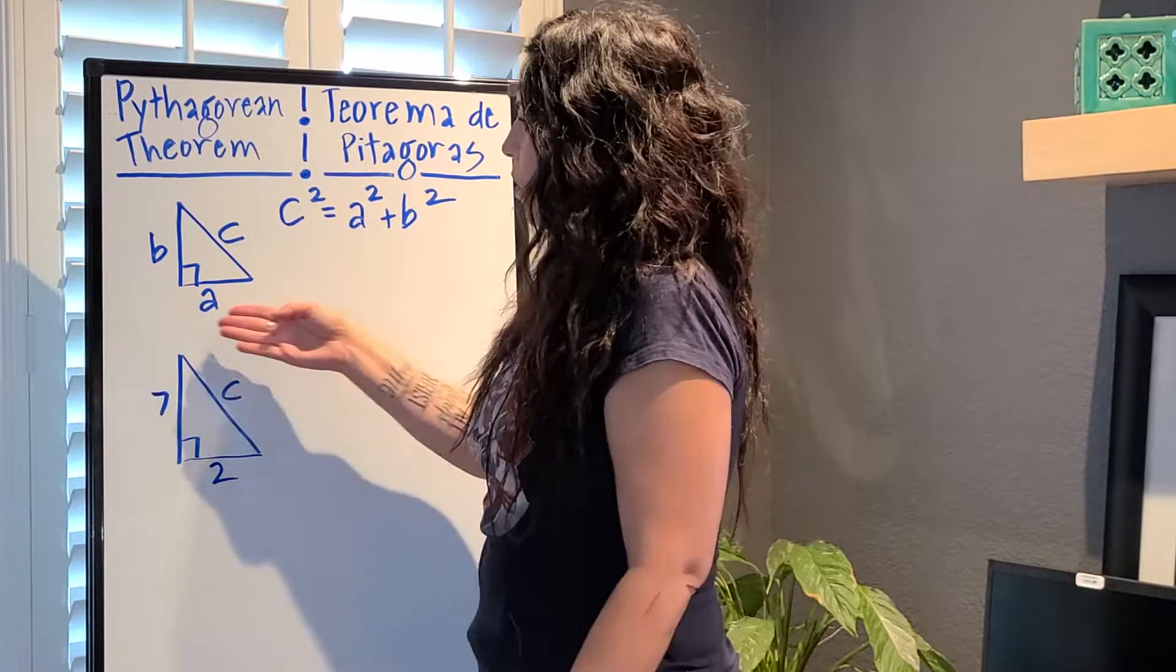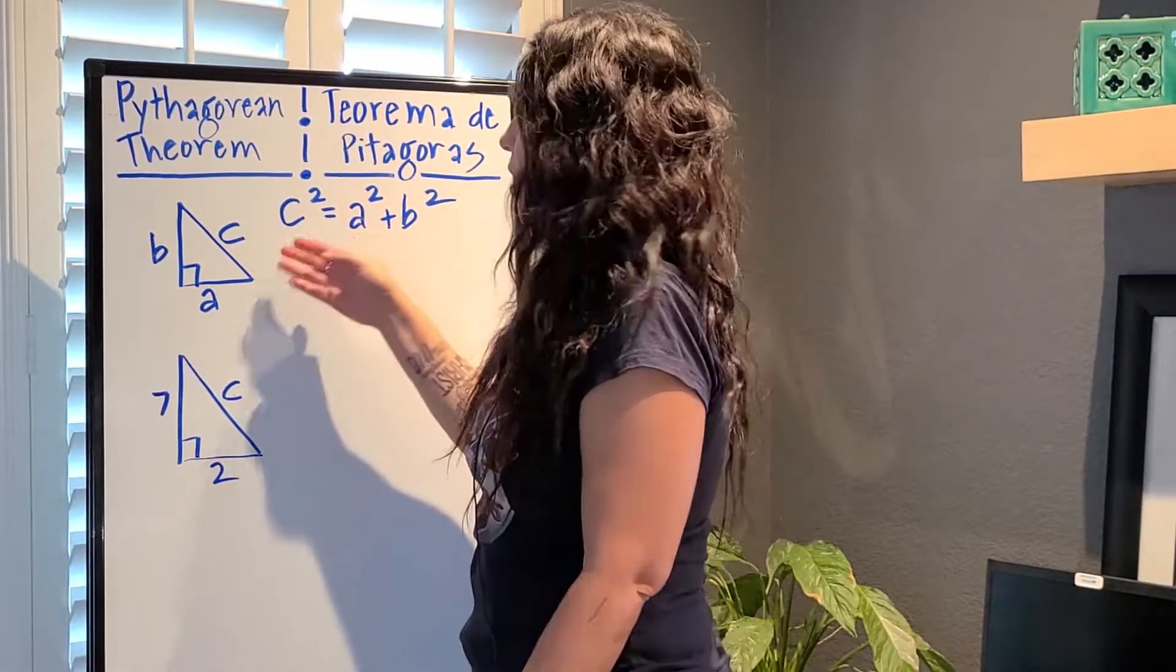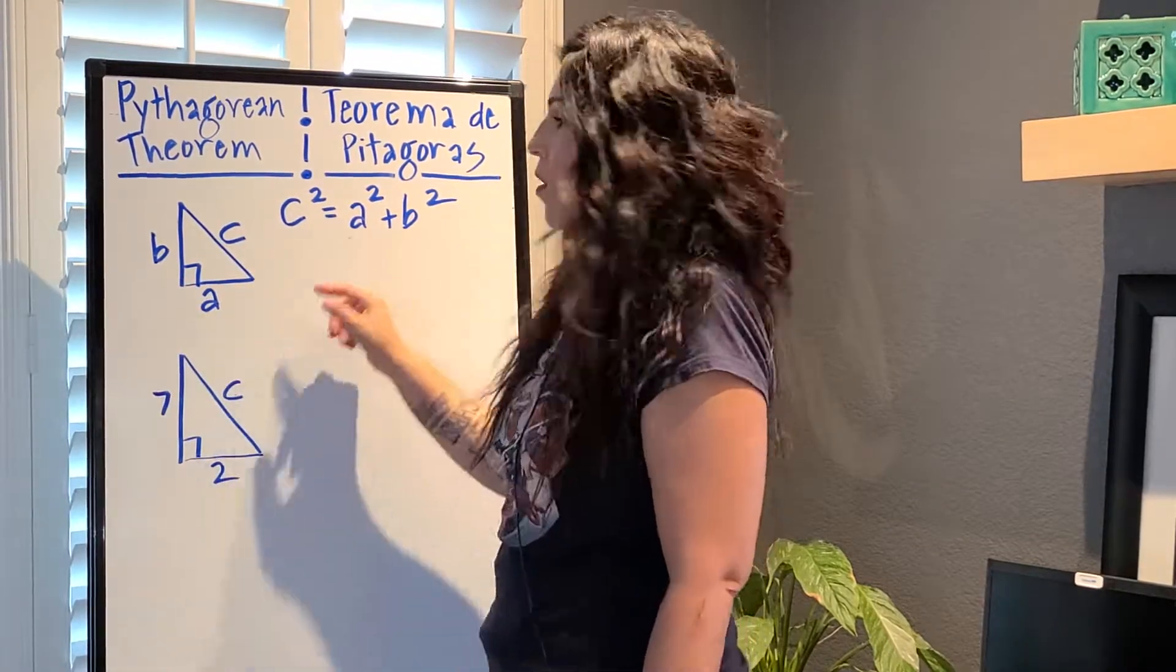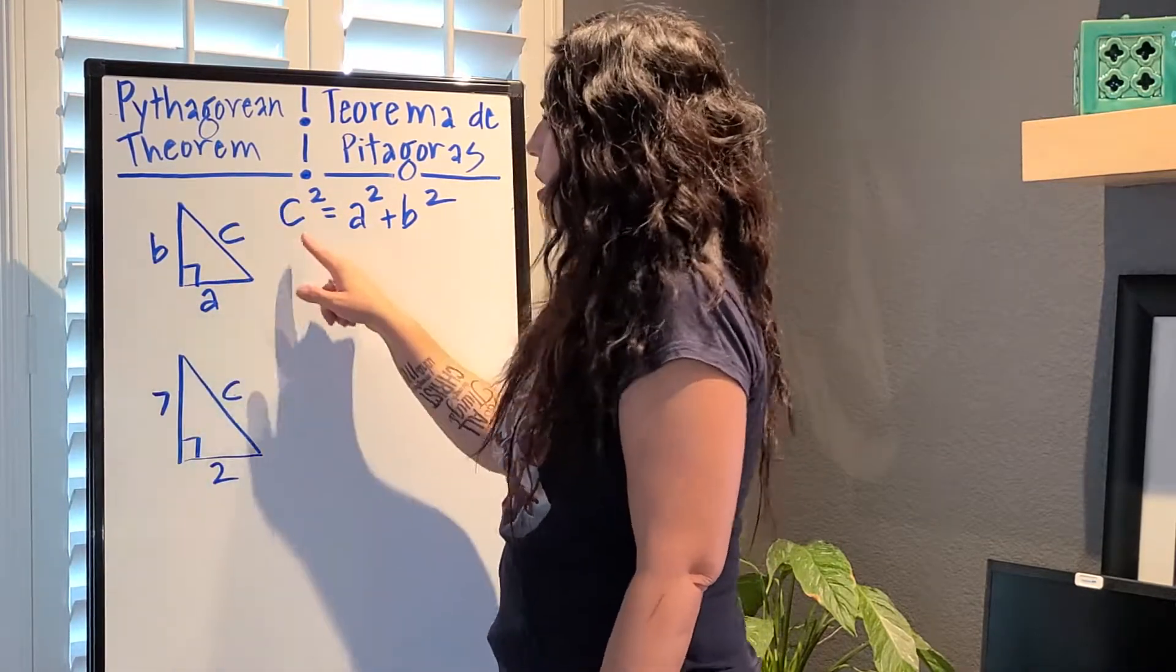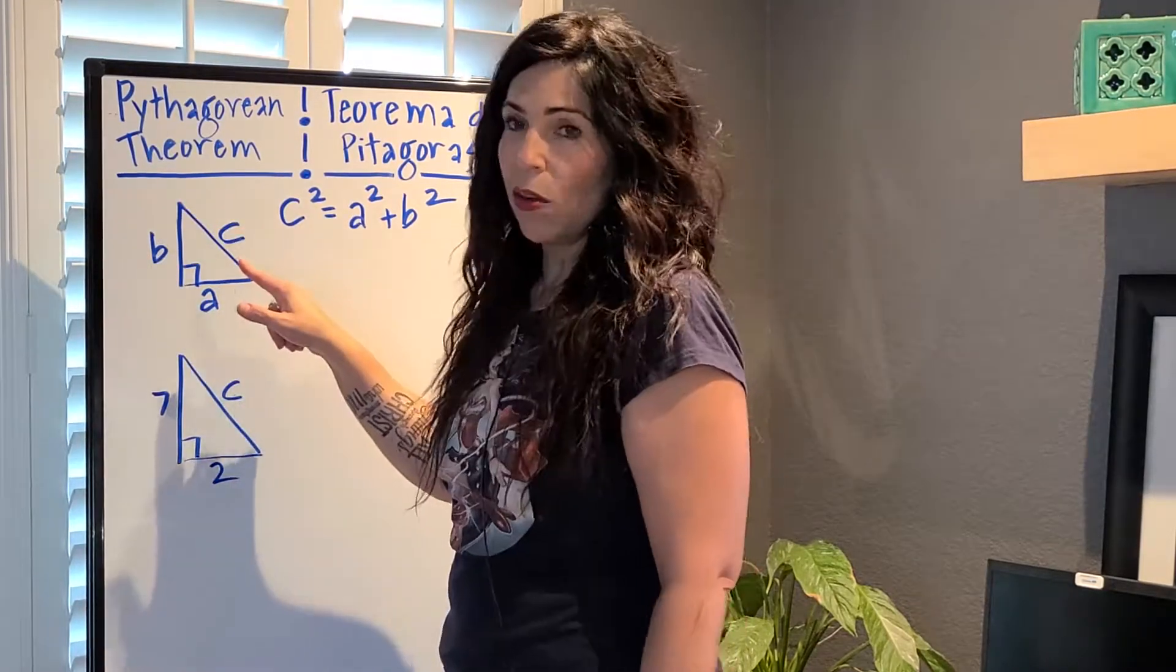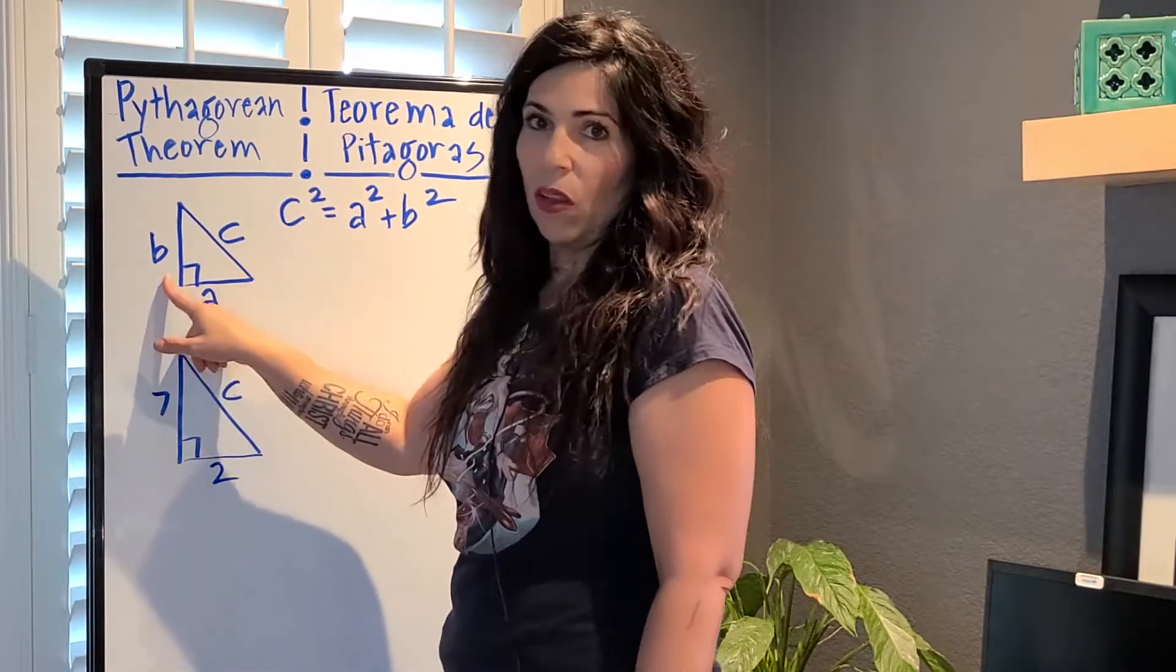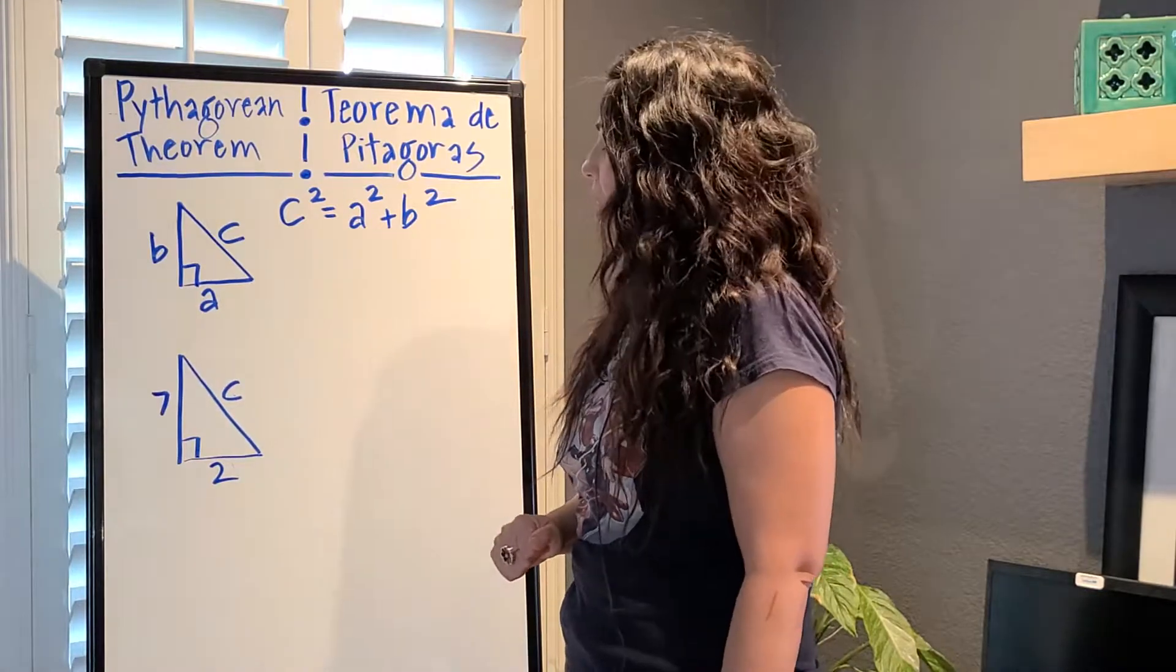So under the Pythagorean theorem, en el teorema de Pitágoras, we know that the hypotenuse squared, which is the longest side, is equal to the sum of each of the sides squared. En el teorema de Pitágoras, cuando tenemos un triángulo, en inglés se llama hypotenuse, el lado más largo al cuadrado, es sumar este lado al cuadrado más este lado al cuadrado. So here's the formula. Aquí tenemos la fórmula.